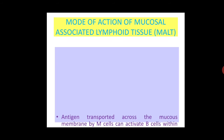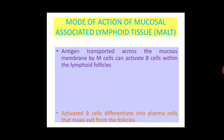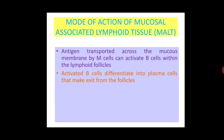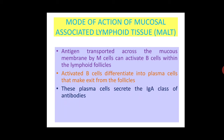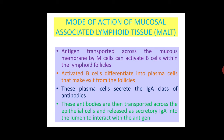These secretory IgA antibodies can interact with the antigen present in the lumen. The mode of action of mucosal-associated lymphoid tissue is through the production of IgA antibodies. Antigen transported across the mucosa activates B cells within lymphoid follicles, which differentiate into plasma cells that secrete IgA, transported across the epithelial cells and released as secretory IgA.